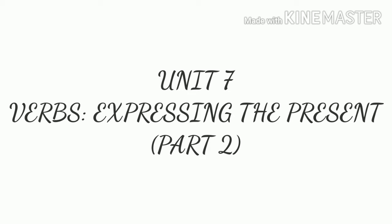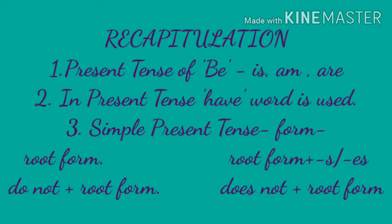Hello children, let's continue with Unit 7, Part 2. Before we begin with the second part, let's recapitulate what we learned in the previous class. The present tense of 'be' is: is, am, and are. In the present tense, 'has' or 'have' is used. The formation of the simple present tense uses the root form of the verb, or we can add 's' or 'es'. In the negative, we use 'do not' or 'does not' followed by the root form of the verb.